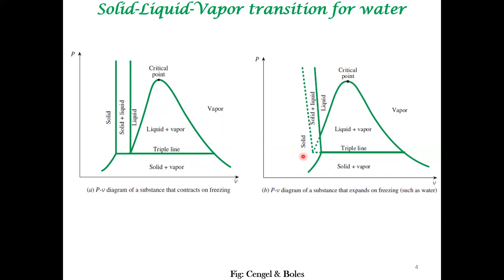So there is a small difference in the phase diagram for water versus a typical substance. For a normal solid, the solid phase has lesser specific volume compared to the liquid phase. But for water, the solid phase has a greater specific volume compared to the liquid phase. This is because when liquid water freezes into ice, there is an expansion.